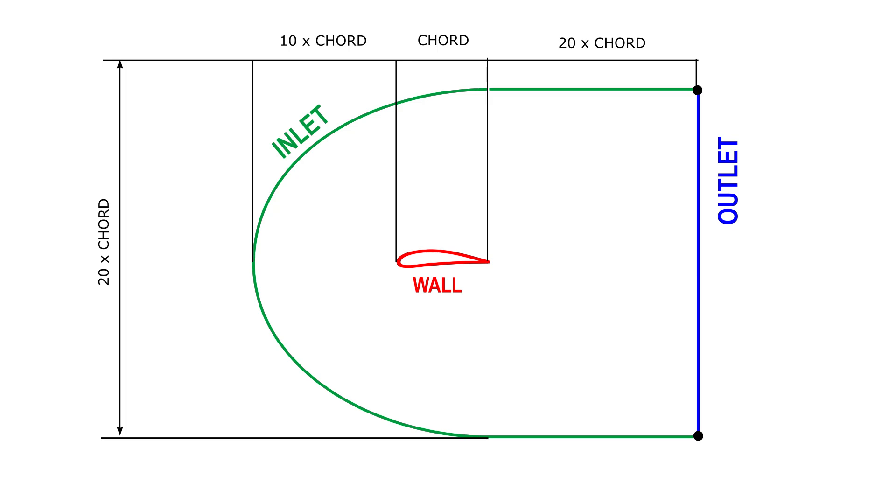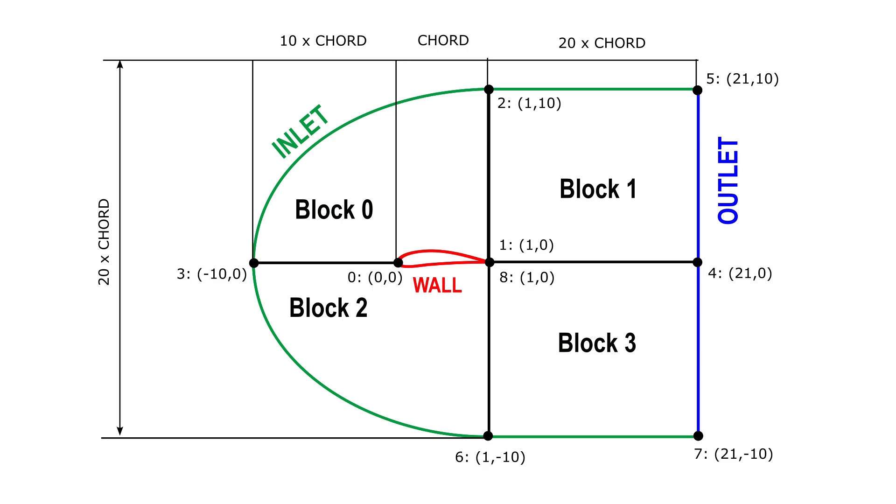Next, split your CFD domain into blocks. In this case I divided it into four blocks. Splitting the domain makes it easier to control the mesh density, improve alignment around the airfoil, and achieve a more structured and higher quality mesh for the simulation. Now number the four corners of each block with vertex IDs and assign coordinates to them based on the CFD domain size you selected earlier. This step defines the geometry of your mesh and ensures consistency when we connect the blocks together.